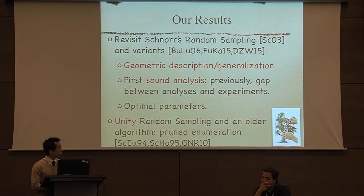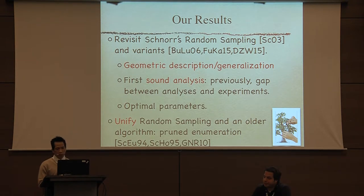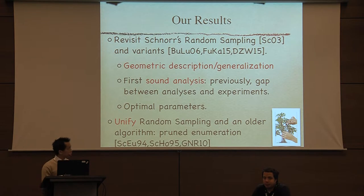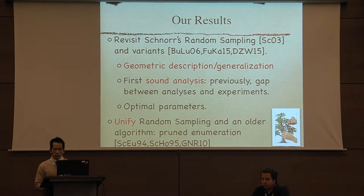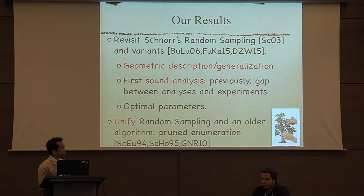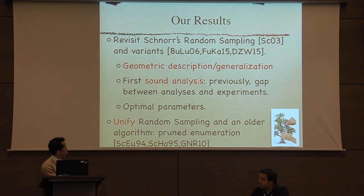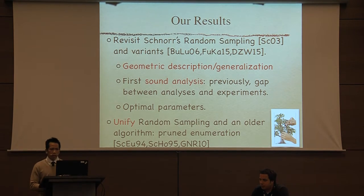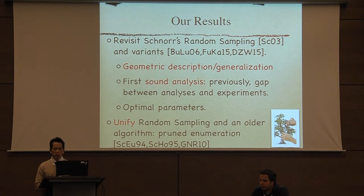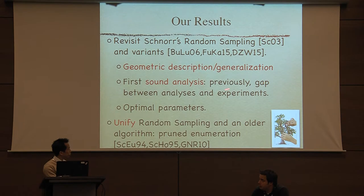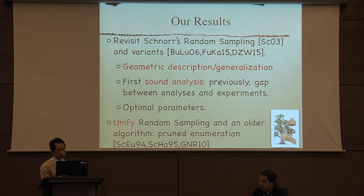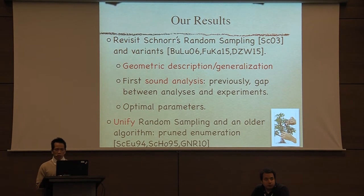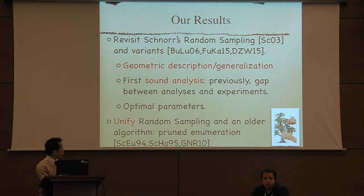This is the topic of this paper. We're trying to revisit Schnorr's random sampling and all the variants that have been proposed, including the one used in these records. The way we do it is we're going to change the description of the algorithm and make it geometric, and really generalize it. Because of this geometric description, we can give a different analysis.